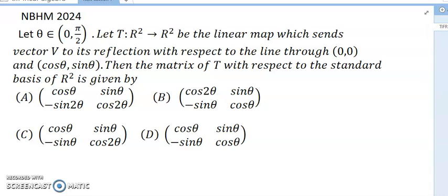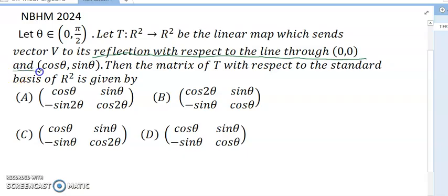Hello dear friends, welcome to my channel. Today's discussion is NBHM 2024. Let theta belong to (0, π/2). Let T: R² → R² be the linear map which sends vector v to its reflection with respect to the line through (0,0) and (cos θ, sin θ). The matrix of T with respect to the standard basis of R² is given by: